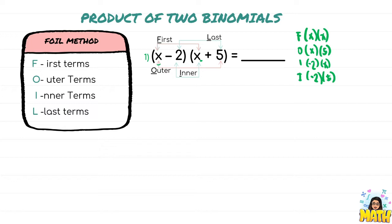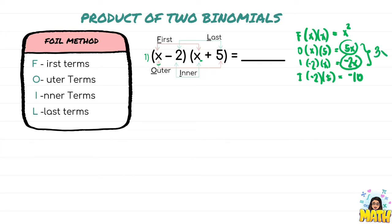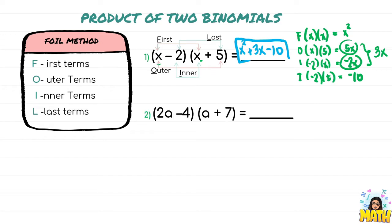Now that we've identified each term, we simply multiply: x times x is x squared; x times 5 is 5x; negative 2 times x is negative 2x; and negative 2 times 5 is negative 10. Usually the outer and inner terms can be combined because they are like terms — 5x minus 2x is 3x. Therefore the final answer is x squared plus 3x minus 10 using the FOIL method.